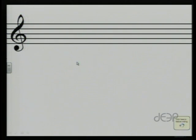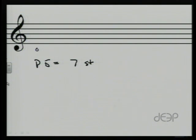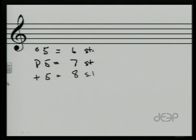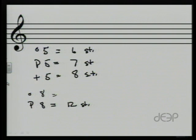A perfect fifth is seven semitones. A diminished fifth is six semitones, and an augmented fifth is eight semitones. A perfect octave is twelve semitones. A diminished octave is eleven semitones, and an augmented octave is thirteen semitones.